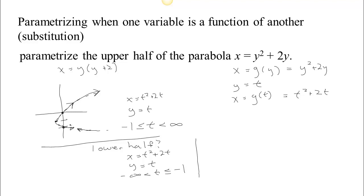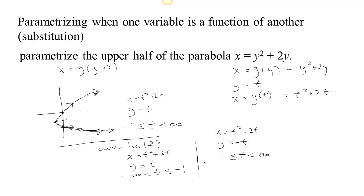If you wanted to traverse the lower half in the other direction — with y becoming increasingly more negative — you could set y equal to negative t. Then since x has to be a function of y, substitute negative t in: x would be negative t squared, which equals t squared, and 2 times negative t gives minus 2t. So x equals t squared minus 2t. We then let t start at 1 (since we want y to start at negative 1 at the vertex), and go forward. As time goes forward, y decreases and x increases, moving out along the lower half. Those are two ways of parameterizing the lower half, with the difference being the direction of travel.